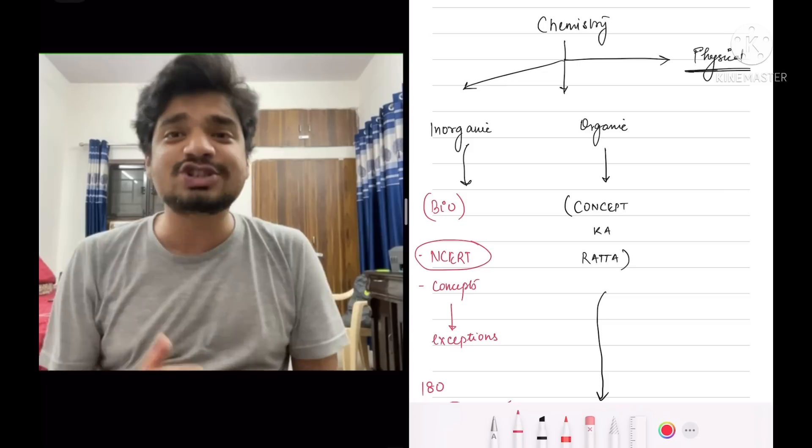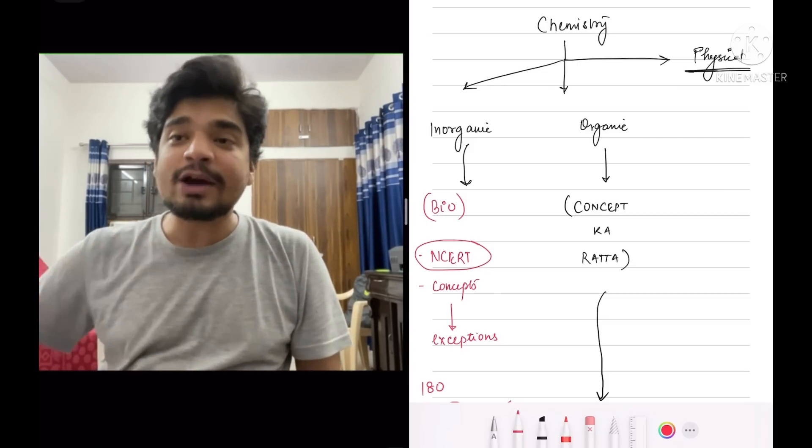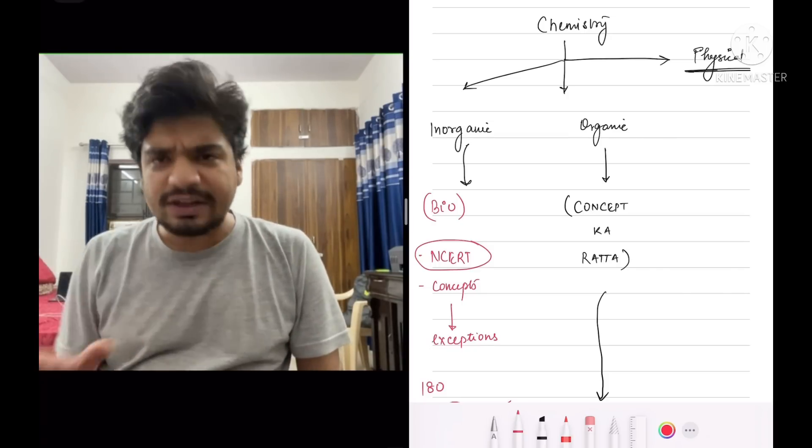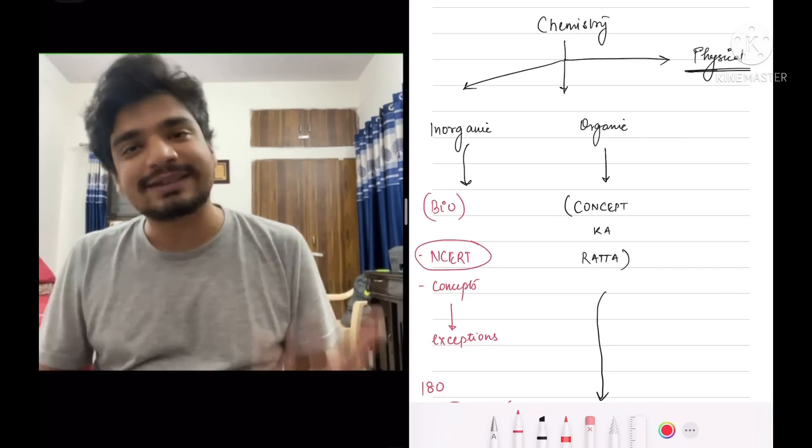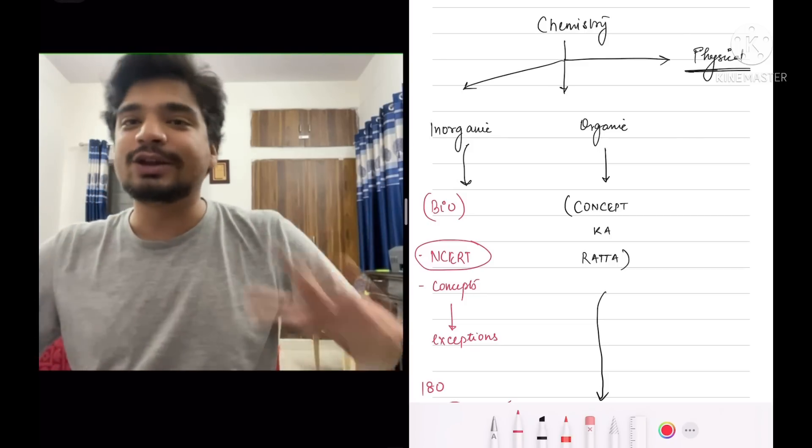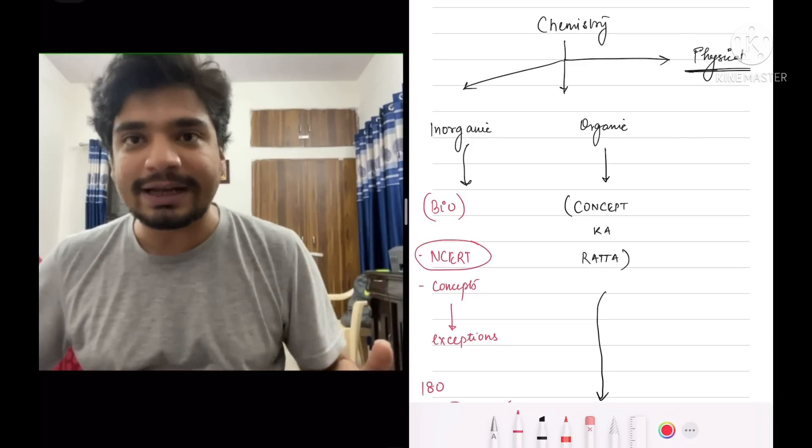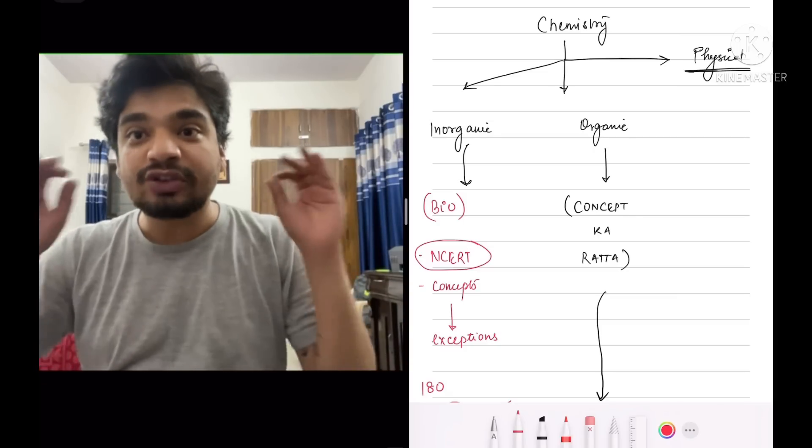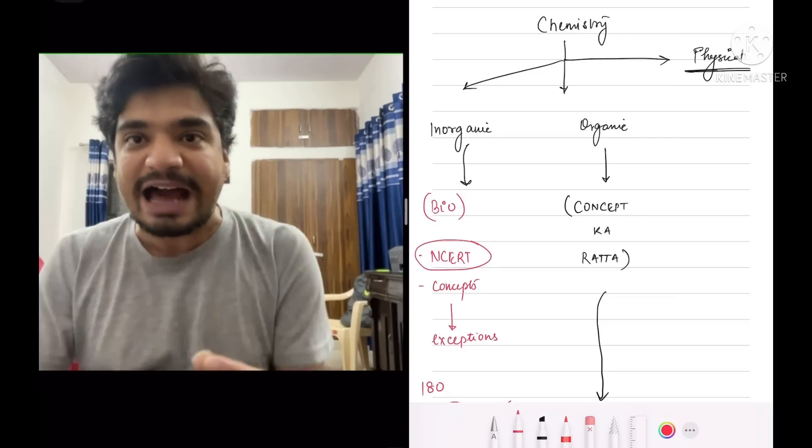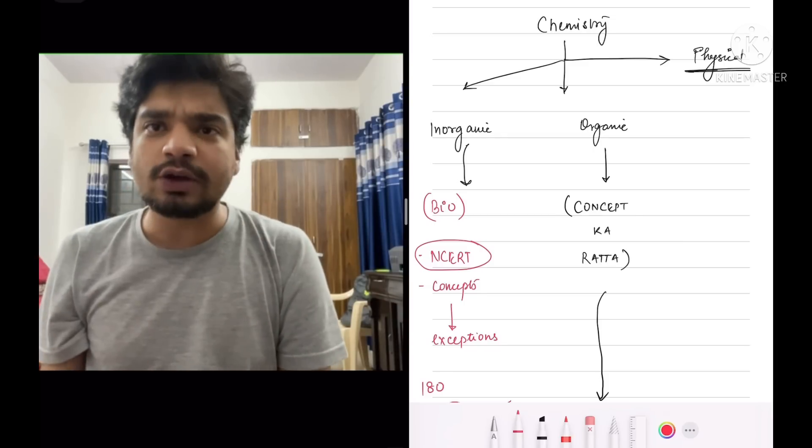Inorganic, even in JEE, nothing comes out of NCERT and in my opinion, inorganic is just like bio. There are very few concepts and the concepts are just like bio. You will learn a concept and you will learn the exception and that's what inorganic is. You just need to remember NCERT and related concepts and that's it. Your 60 marks out of 180 are guaranteed if you thoroughly do your NCERT. There is absolutely no doubt about that.